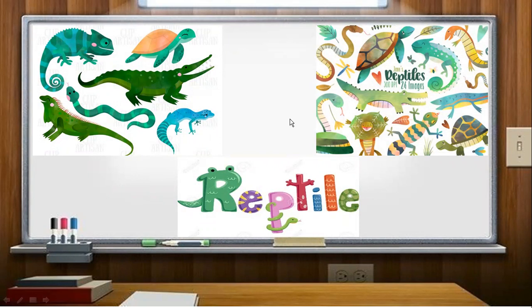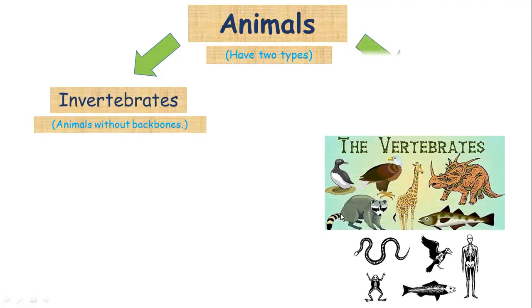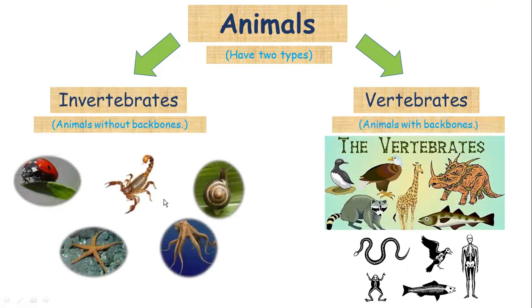So that is about reptiles. Now, let's go to our main discussion for today, an overview about animals. Animals have two types. What are the two types of animals? We have invertebrates and vertebrates. What is invertebrates and what is vertebrates? Invertebrates are animals without backbones, and vertebrates are animals with backbones. As simple as that. Once again, invertebrates are animals without backbones, and vertebrates are animals with backbones. Remember that.